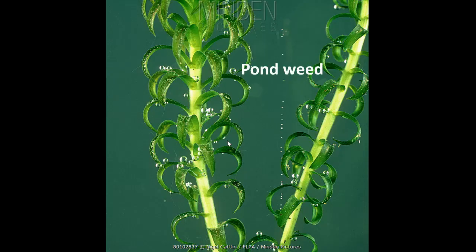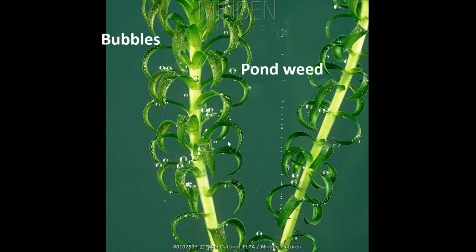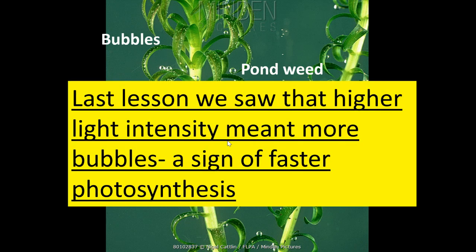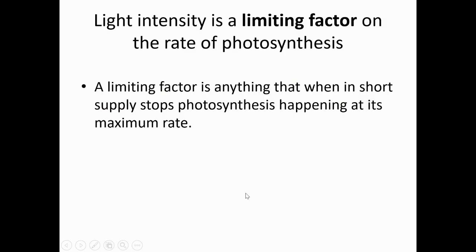From last lesson you'll hopefully recognise this: we used pond weed underwater and measured the rate of photosynthesis by counting how many bubbles were produced. Bubbles are a product of photosynthesis, and the key takeaway is that higher light intensity meant more bubbles — higher light intensity meant faster photosynthesis. Today we'll look at the other factors that also affect the rate of photosynthesis.